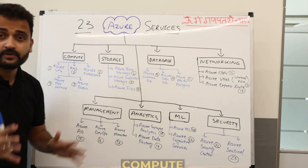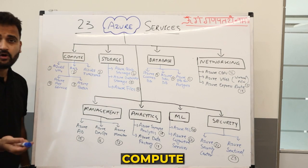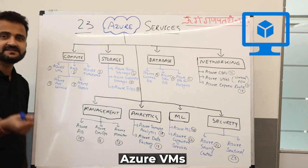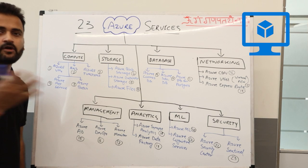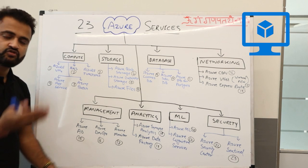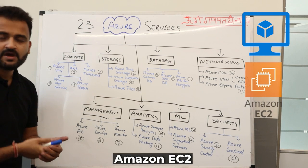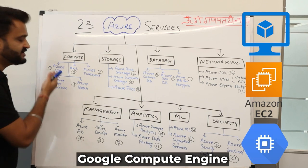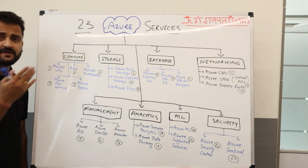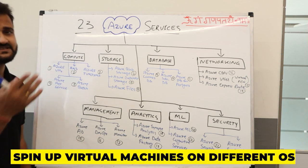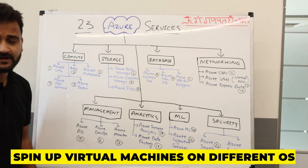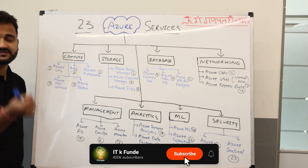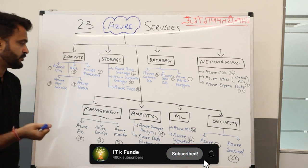Let's start with compute. Under compute, we have Azure VMs — this is where anything starts across cloud. In AWS we have EC2, and in Google we have Google Compute Engine. Similarly, Azure VMs let you spin up virtual machines using different operating systems, and it is one of the most basic services any cloud provider offers.